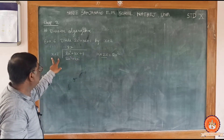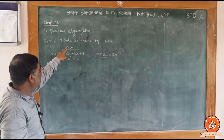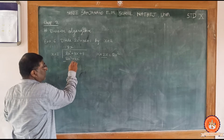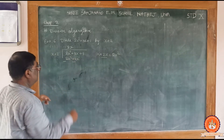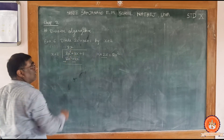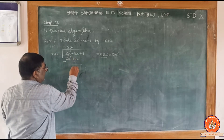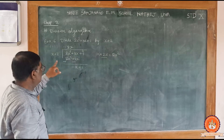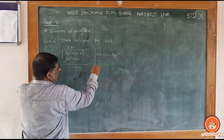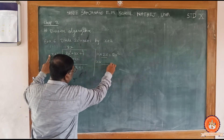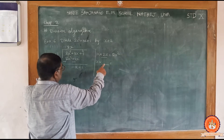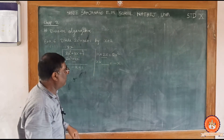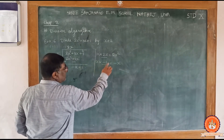Both terms of the divisor are multiplied, then we change the signs. The first term cancels. Then 3x minus 4x equals minus x. Drop down the next term, giving minus x plus 1. Now think: what multiplied by x gives minus x? It is minus 1. So x times minus 1 is minus x, and 2 times minus 1 is minus 2.